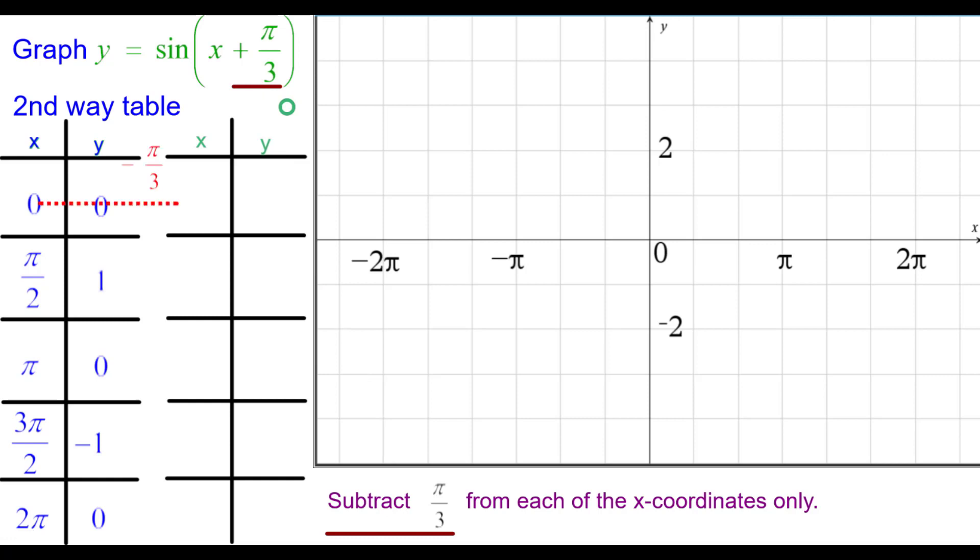So 0 minus pi over 3 will be negative pi over 3. None of the parameters affect the y coordinates so it stays the same at 0. And so we'll plot negative pi over 3 comma 0.